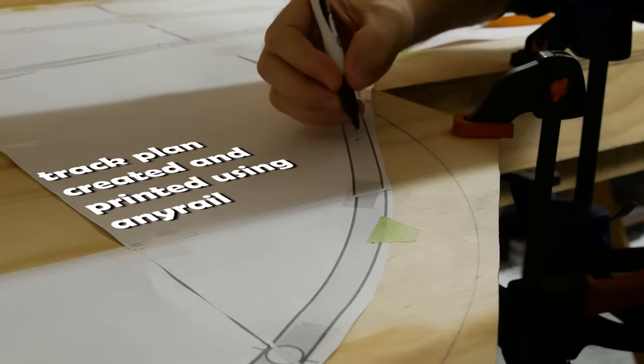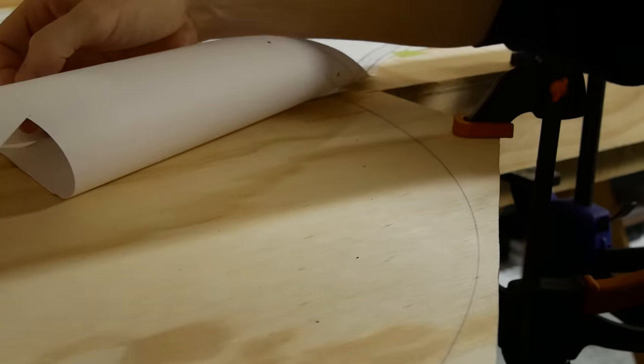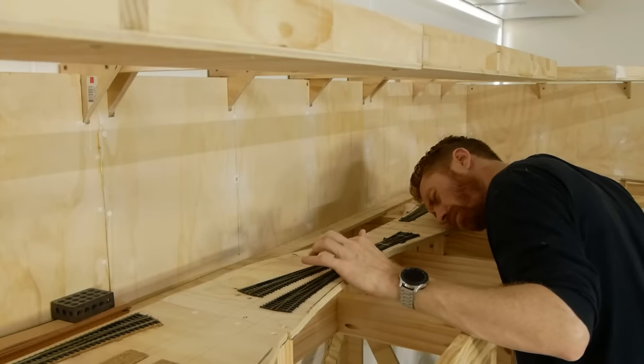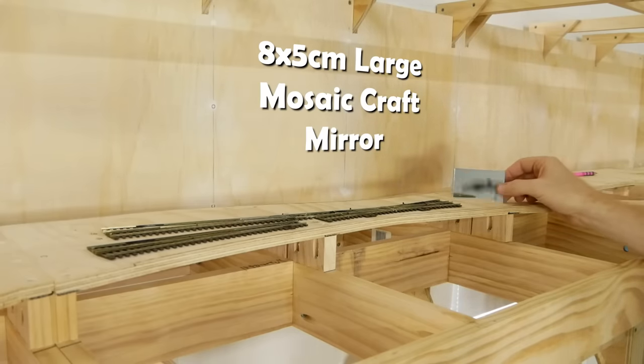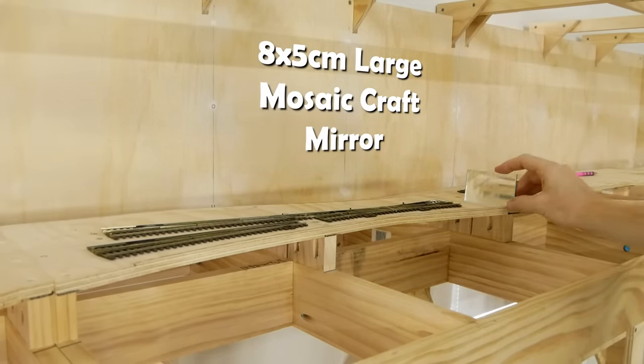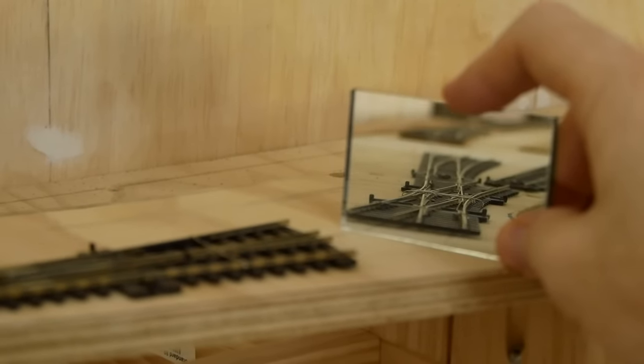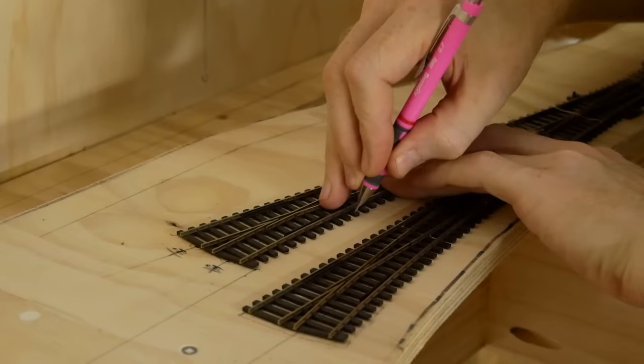When laying the track I try to start with the turnouts. The track plan has been transferred from the computer to paper templates and then onto the plywood baseboard. Now it's just a matter of getting the turnouts lined up in the right spot and the rest should join up. A must-have tool for track laying is a small mirror. This lets me get the perfect view to help line up the turnouts with the track already laid in the distance. Once happy with the alignment I mark the position of each turnout.